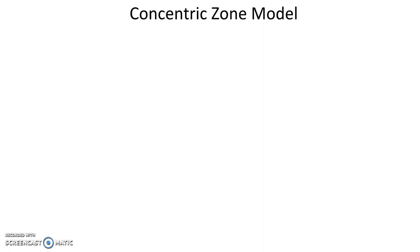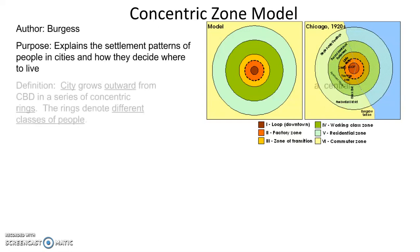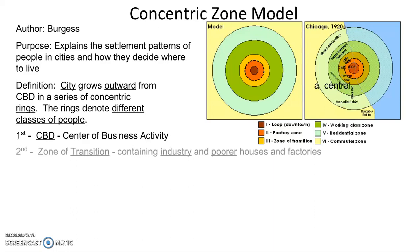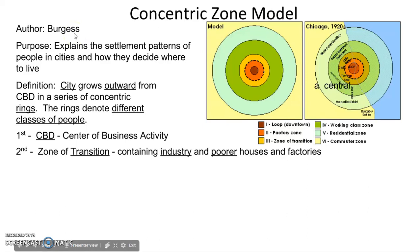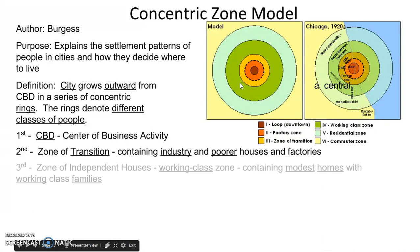Next, let's talk about urban models. Our first in the urban model section is the Concentric Zone Model. The concentric zone model looks very similar to the von Thünen agricultural model. This model was created by Burgess, and the purpose, like most of the urban models, is to explain the settlement patterns of people in cities and how they decide where to live. The city grows outward from the CBD in a series of concentric rings, and the rings denote different classes of people.